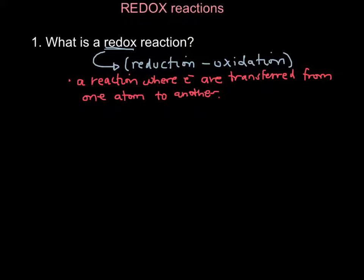Redox reactions are any chemical reaction where electrons are leaving one element and going to another. We've talked about a lot of different kinds of reactions: synthesis, decomposition, combustion, single replacement, double replacement. Sometimes these reactions involve the transfer of electrons from one element to another. Those kinds of reactions are called redox reactions. You can actually group all of those reaction types into the kind that transfer electrons and the kind that don't. The ones that do are called redox reactions.